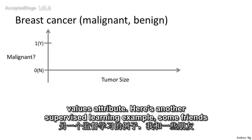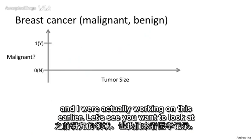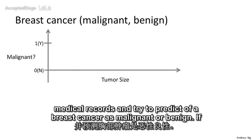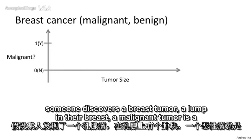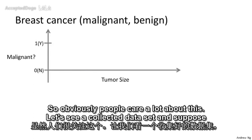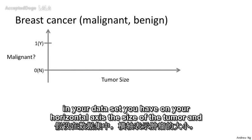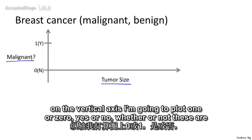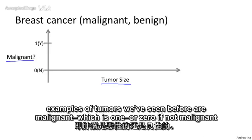Here's another supervised learning example. Let's say you want to look at medical records and try to predict whether breast cancer is malignant or benign. If someone discovers a breast tumor, a malignant tumor is one that is harmful and dangerous, and a benign tumor is one that's harmless. In the dataset, on the horizontal axis you have the size of the tumor, and on the vertical axis, one or zero — yes or no — whether these tumors we've seen before are malignant or benign.